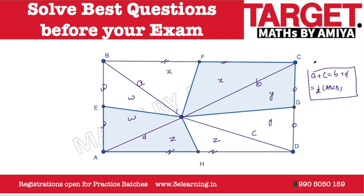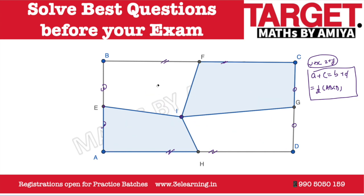So A equals W plus X, and C equals Z plus Y. Therefore A plus C gives us all four values: X, Z, Y, and W. Similarly, B plus D also covers X, Y, W, and Z. This proves that whenever we have the midpoints of the respective sides and I is a point inside the quadrilateral, the figure is divided into four smaller quadrilaterals, and the sum of two opposite ones (the white portions) equals the sum of the other two (the blue portions), each being half the total area.